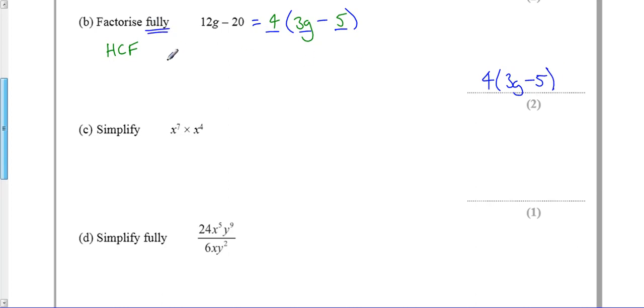It says here you've got to factorize it fully, because there are other factorizations. If I'd chosen the number 2, I'd have to have 6g minus 10. That looks right. I don't like this answer compared to this answer because that is not the highest common factor. It's a factor, but it's not the biggest one. To factorize fully, I need the biggest number on the outside of the bracket.